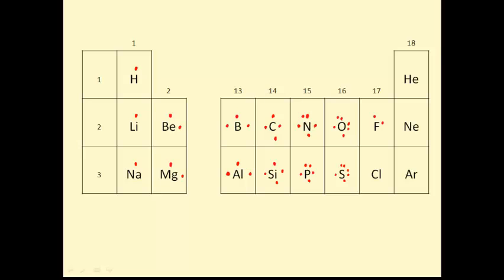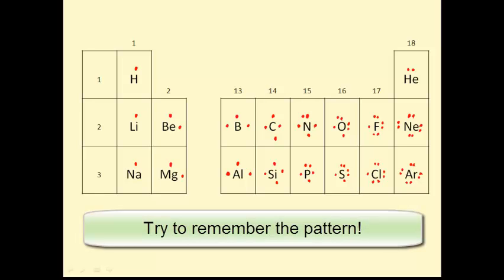Group 17 has seven. Group 18, the noble gases, have eight valence electrons. Helium only has one shell, so it doesn't follow the octet rule, but all the others do.